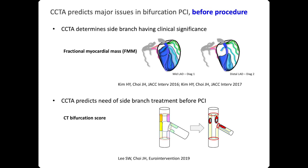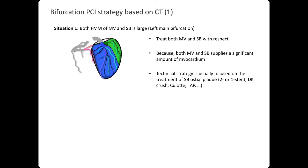CT can predict major issues in bifurcation PCI, such as the clinical significance of the side branch or the risk of side-branch occlusion even before the procedure. I'd like to suggest bifurcation PCI strategies based on CT. The first situation is when both the myocardial mass of the main branch and side branch are large — such as in left main bifurcation — please treat both branches with respect, because both vessels supply a large amount of myocardium. The technical strategy is usually focused on treatment of the side-branch ostium, such as two-stent techniques including DK-CRUSH, CULOTTE, or TAP.